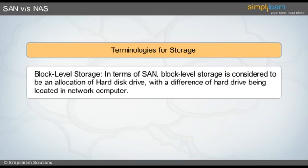In Module 2 of the Advanced Cloud Computing course, thus in terms of SAN, block-level storage is considered to be an allocation of a hard disk drive to a client system. The difference is that the hard drive is located in the network computer, typically in an SAN box. Block-level storage allocation is used only in terms of FC SAN or iSCSI SAN.